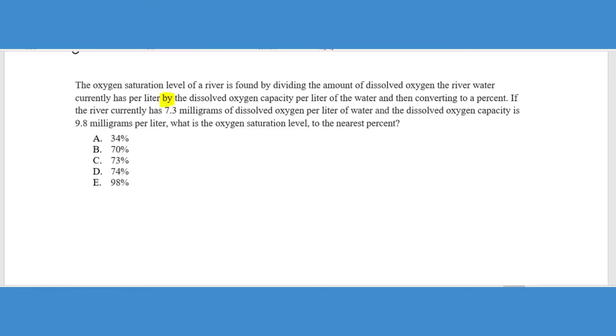So let's take a look at this. We're going to divide the amount of the dissolved oxygen in the river by the dissolved oxygen capacity per liter of water. So those are the two values that we're dividing here. And then we're going to convert them to a percentage. So that first statement just tells you how to do this particular operation. So it says if the river currently has 7.3 milligrams of dissolved oxygen per liter of water and the dissolved oxygen capacity is 9.8 milligrams per liter, what is the oxygen saturation level? So basically all they're really asking us to do is divide these two things. And so we're going to divide 7.3 by 9.8.